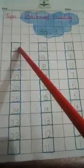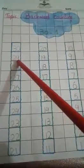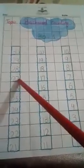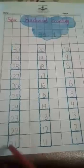First number is 30, then 29, 28, 27, 26, 25, 24, 23, 22, 21, 20, 19, 18, 17, 16, 15, 14, 13, 12, 11.